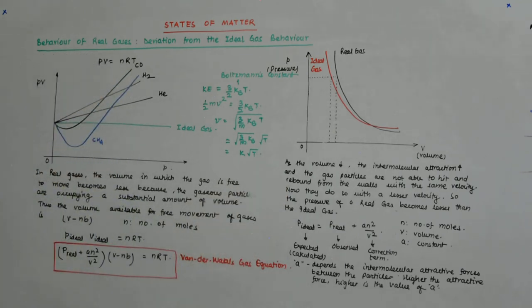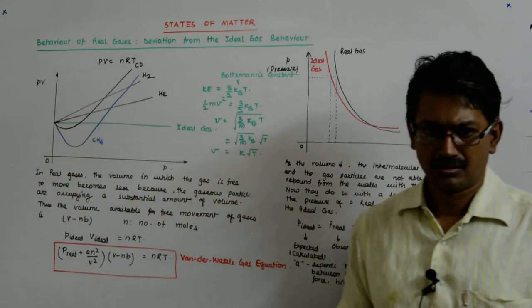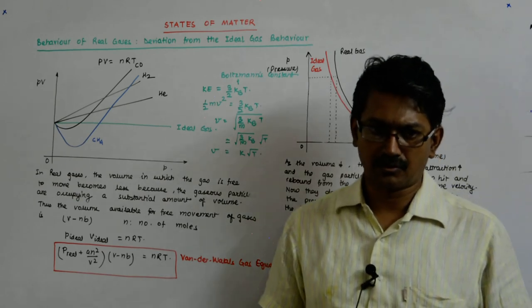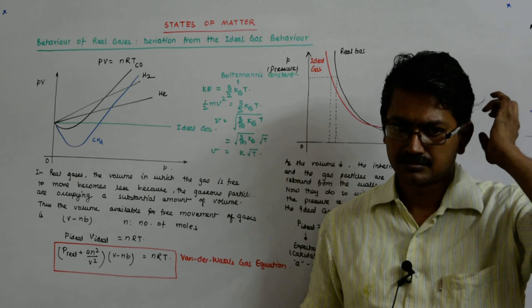So that becomes k into root T, correct? So the velocity varies as root of the absolute temperature, root of the temperature in Kelvin. Understand? Do we get the point?